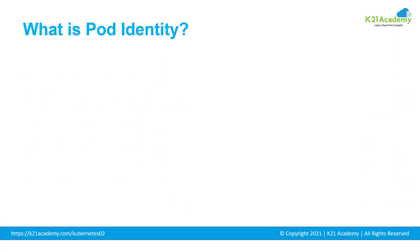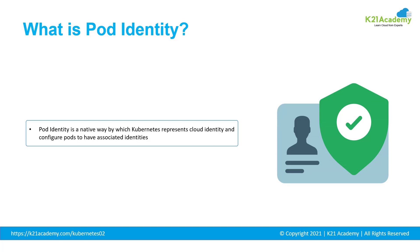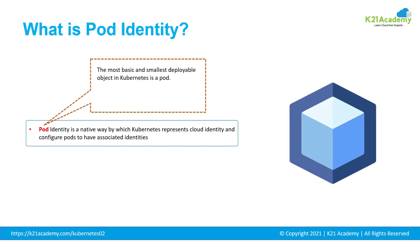Pod identity is an original way used by Kubernetes to represent cloud identity and configuration of pods to have associated identities. The most important part is to understand what exactly a pod is. A pod is the smallest, most basic deployable object in Kubernetes — it is like a single instance of a running process in the cluster. These pods contain one or more containers like Docker containers. Whenever a pod runs multiple containers, the containers work as a single identity and share the pod's resources.